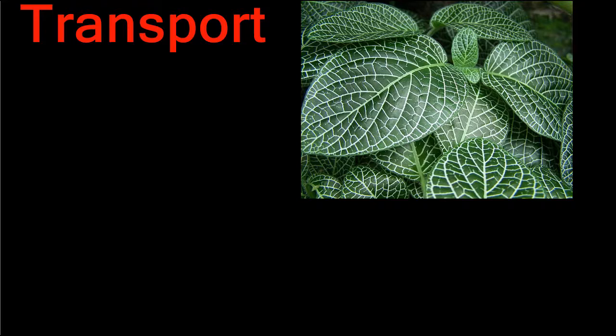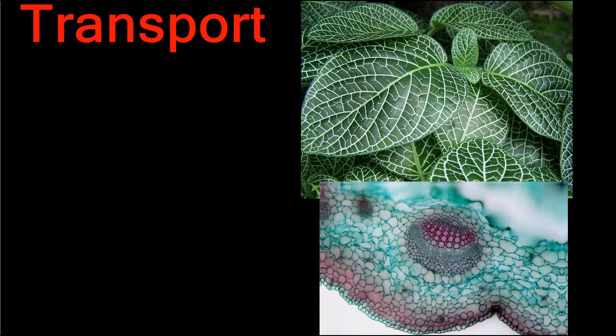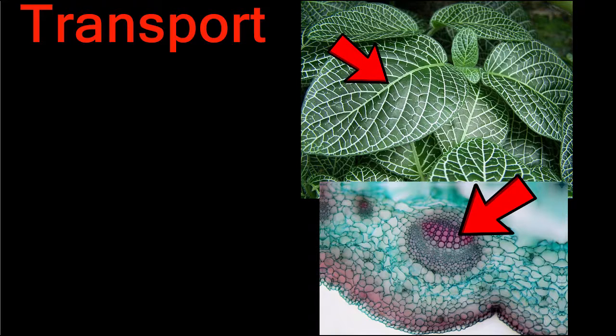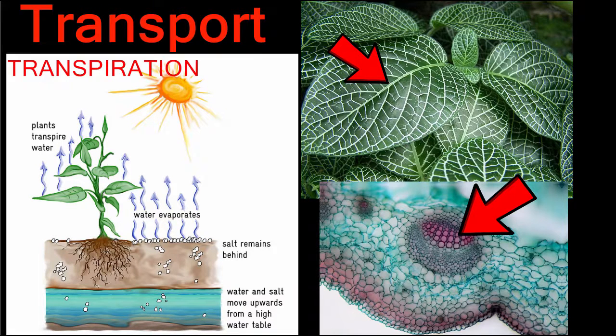Plants are also living and must therefore complete the task of transport. Instead of blood vessels, plants have vascular tissue called xylem and phloem to transport water and nutrients. Plants do not have a heart to pump materials around. Instead, they use a force called transpiration that uses the sun's ability to evaporate water to draw materials upward.